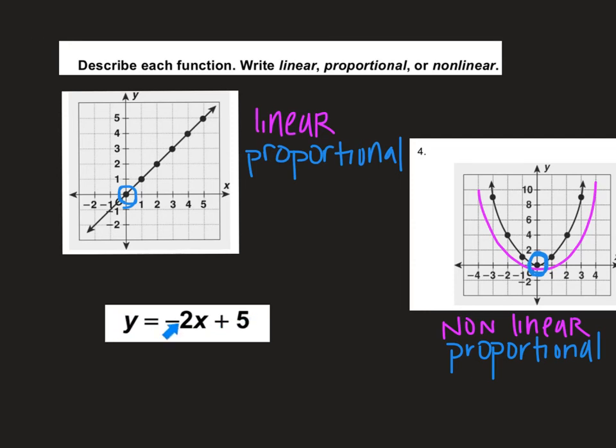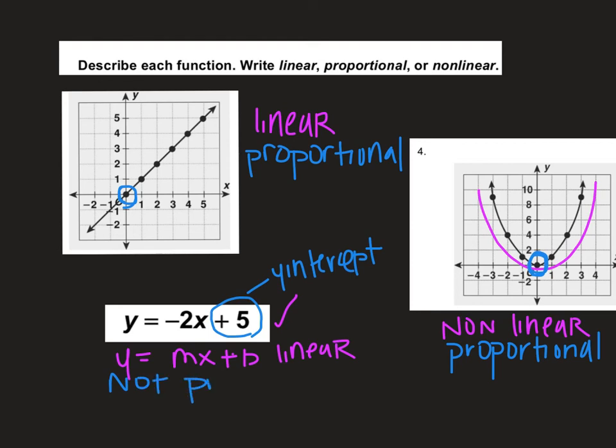When I take a look at this equation, it needs to be in the form of y equals mx plus b. And it does. So I would say that this is linear. And then you need to look and see if the y-intercept is 0. This one is not. The y-intercept is positive 5. So this would be not proportional. And that's going to be because the y-intercept is not 0. So I'll put that on there. Y-intercept is not 0.